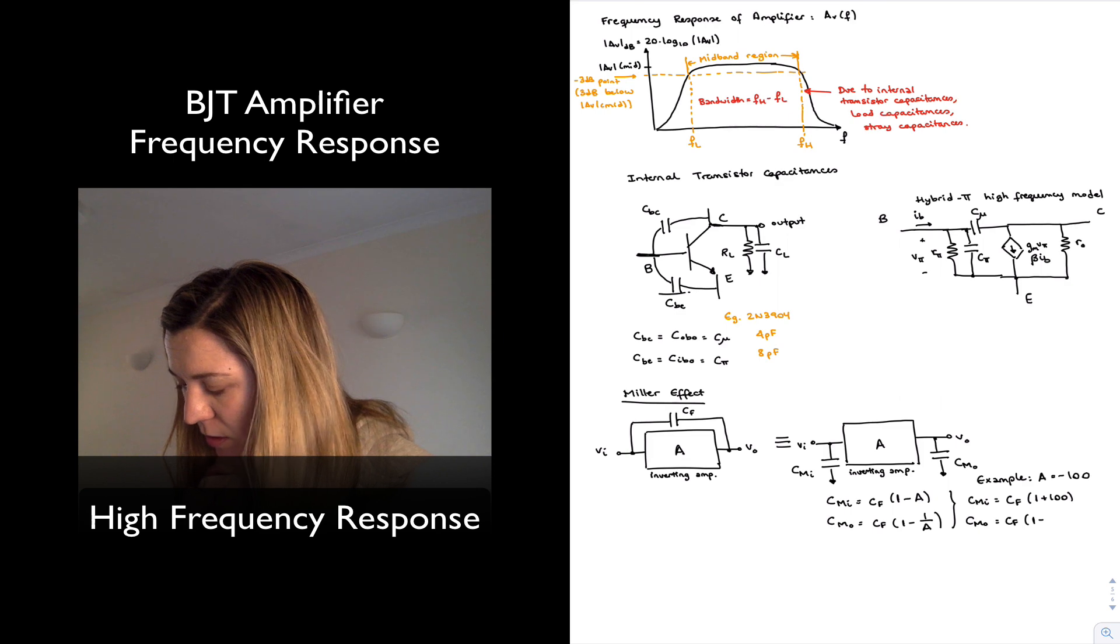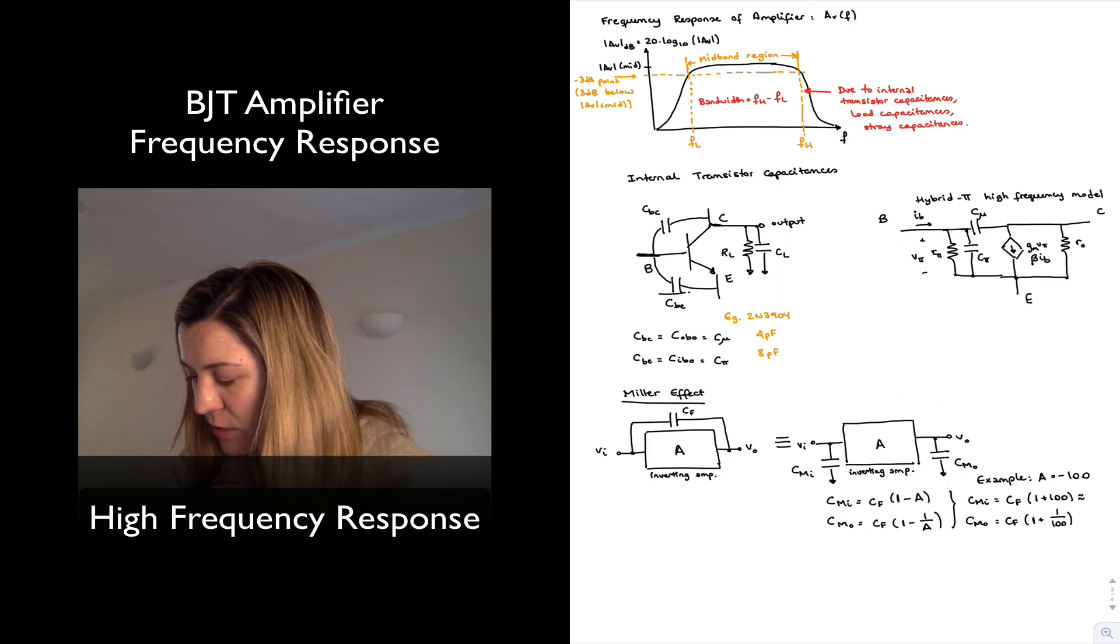One over negative 100, or one plus one over 100. And so we can see basically that this is approximately equal to 100 Cf and this is approximately equal to Cf.